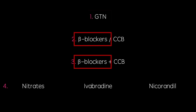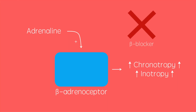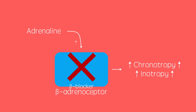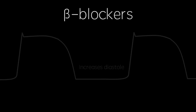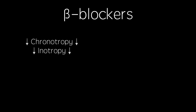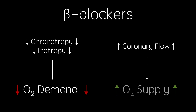Beta blockers, as their name suggests, are antagonists to beta adrenoceptors. This prevents sympathetic stimulation of the heart, evoking chronotropy and inotropy reduction. This reduction in chronotropy increases the time that the heart spends in diastole, which therefore increases coronary flow. This reduction in chronotropy and inotropy reduces cardiac oxygen demand, while the increase in coronary flow increases cardiac oxygen supply.